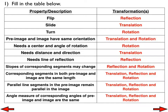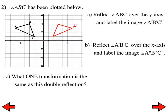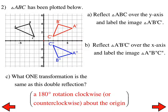I'll pause to let everyone fix anything done incorrectly. For number 2, you have a triangle in your notes. Reflect triangle ABC over the y-axis and label it A prime, B prime, C prime. Then reflect that over the x-axis and label it A double prime, B double prime, C double prime. Then figure out what one transformation could produce the same result as that double reflection. When we reflect ABC over the y-axis and then reflect that over the x-axis, the equivalent single transformation is a 180-degree rotation clockwise or counterclockwise about the origin. This problem sums up what we're doing today.